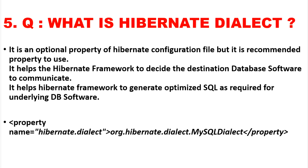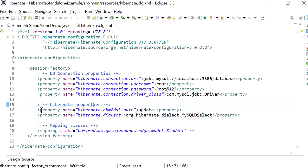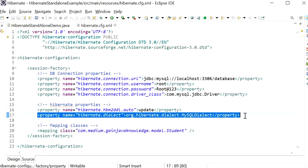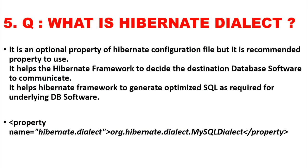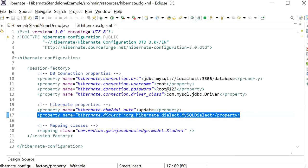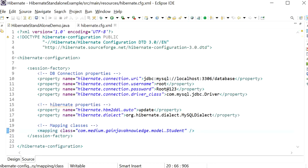The next question is: what is Hibernate dialect? In our configuration file we define the hibernate.dialect property. It is an optional but recommended property of the Hibernate configuration file. It helps the Hibernate framework decide the destination database software to communicate with, and it helps Hibernate generate optimized SQL as required for the underlying database software. For example, if you are using MySQL, you use the MySQL dialect class.